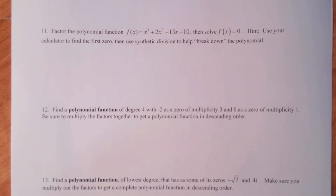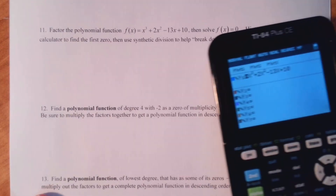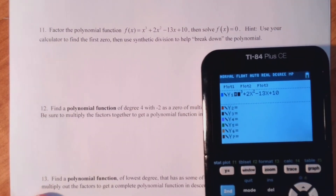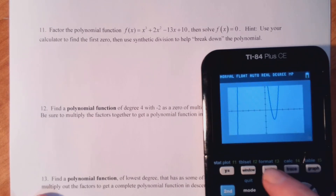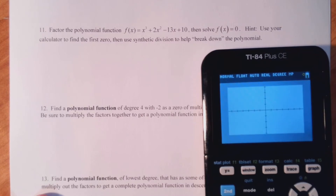Basically, we'll get the first zero off our calculator, we'll prove that it's a zero, and we'll find the other zeros using our work. So if you go to a calculator and hit graph, and I hit zoom decimal — that was option four — we can actually see all three zeros. This is a third degree polynomial, and we see three zeros there.